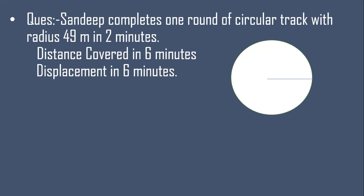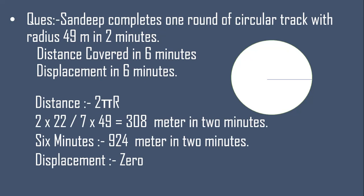To understand this, let's solve a question: Sandeep completes one round of a circular track with radius 49 meters in 2 minutes. Distance covered in 6 minutes? First, we find the circumference of the circle — that is the distance per round. Circumference = 2πr = 2 × (22/7) × 49 = 308 meters in 2 minutes.